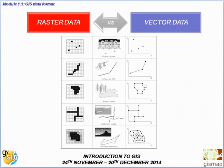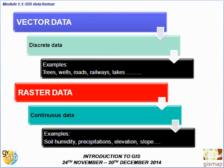Here is a summary of how we can represent the same feature in raster or vector format. You can see that in raster data, houses are just one pixel; in vector data, they are represented as points. To summarize: vector data are used to represent discrete data such as trees, wells, roads, pathways and lakes, while raster data are used to represent continuous data such as salinity, precipitation, elevation and slope.